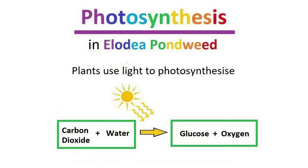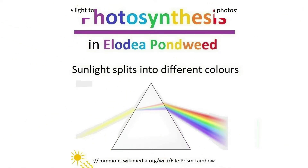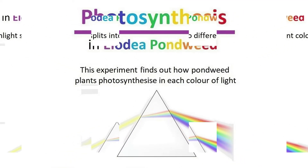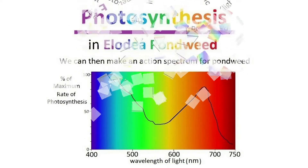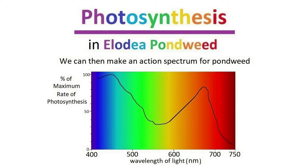In water plants, the oxygen will be given off underwater. Sunlight can be split into different colors using a glass prism. This experiment will find out how pondweed plants photosynthesize using each color of light. We can then make an action spectrum for pondweed by graphing the percent of the maximum rate of photosynthesis against the wavelength of light.